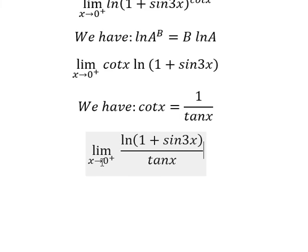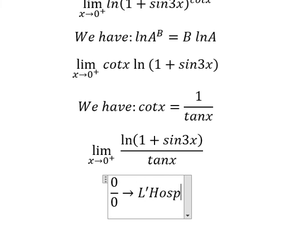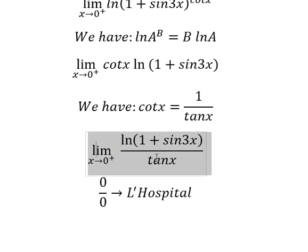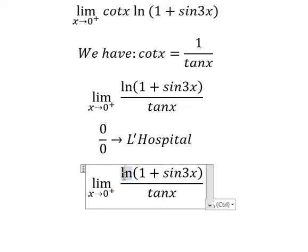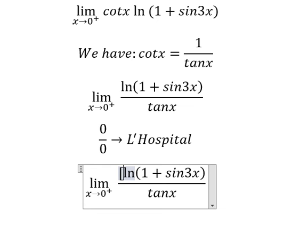So when x approaches zero, this one you got zero, ln of one we have zero, this one we have zero. So we have zero over zero, so we can use L'Hospital. That means we need to do the derivative on numerator and denominator.